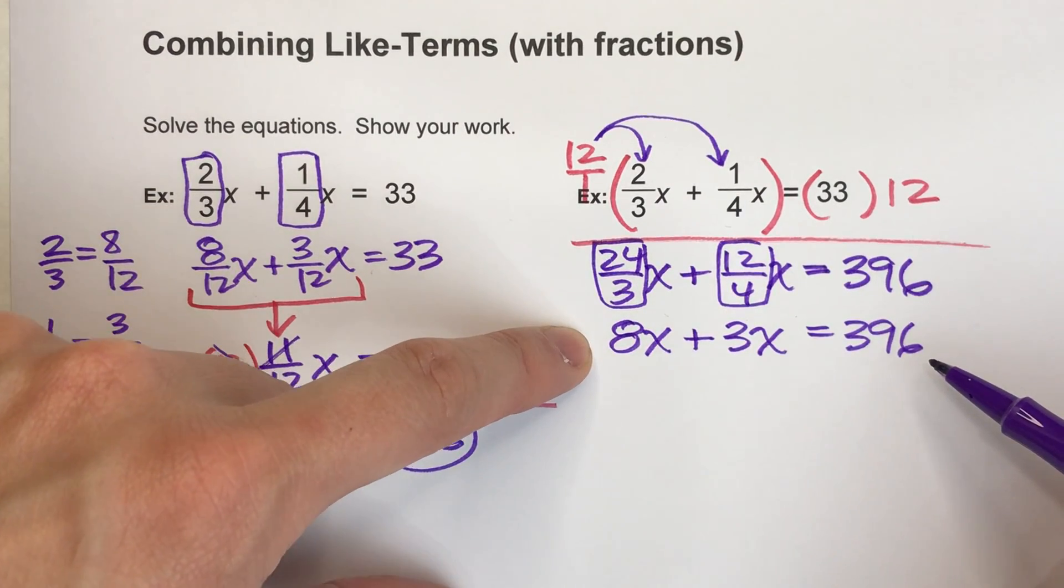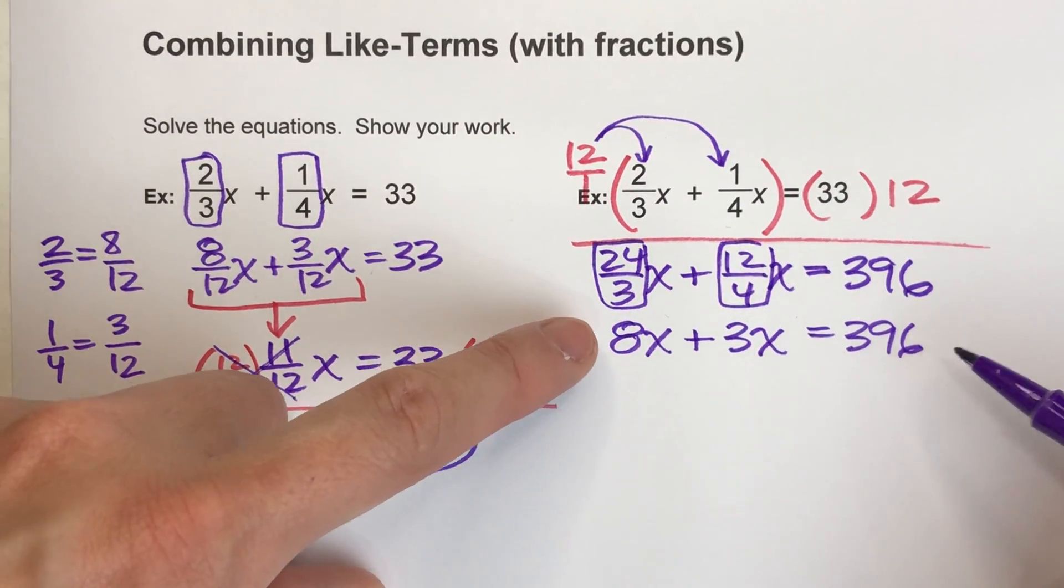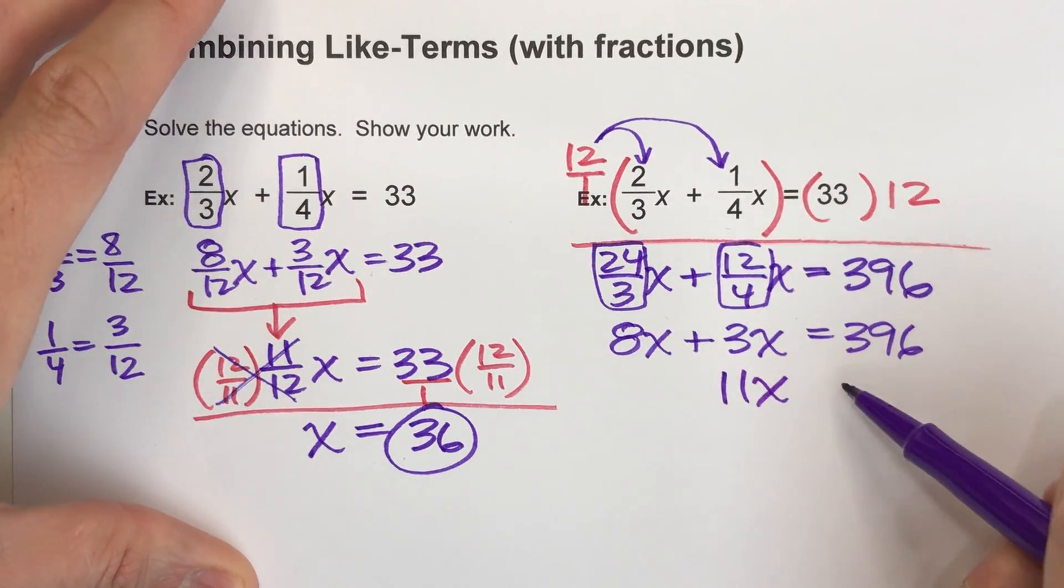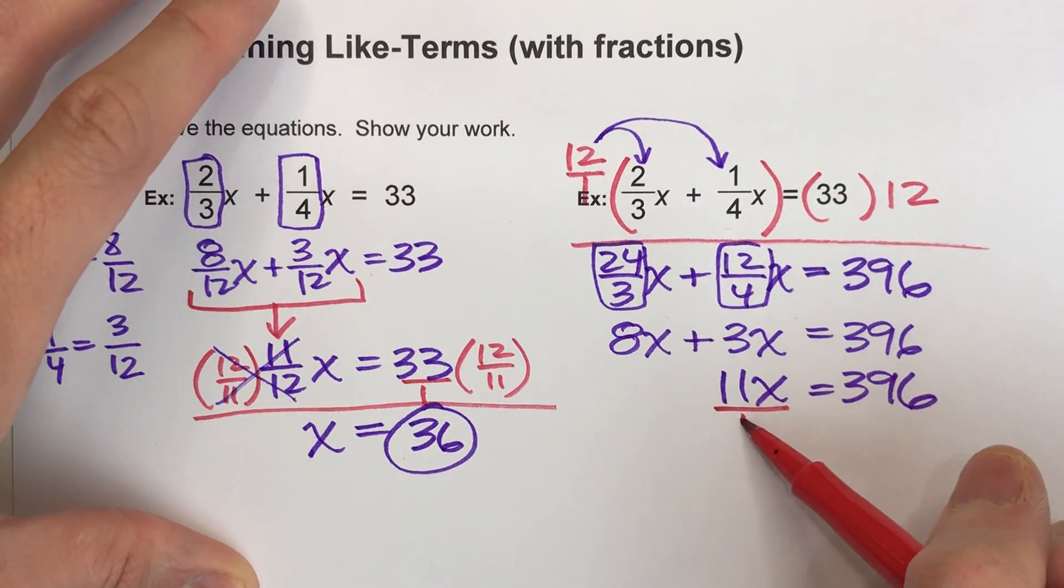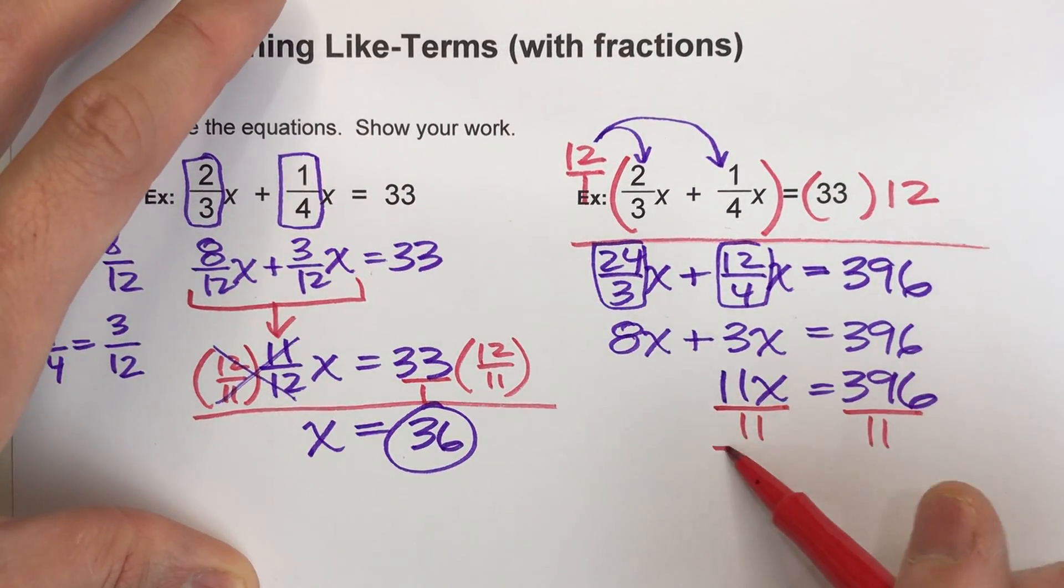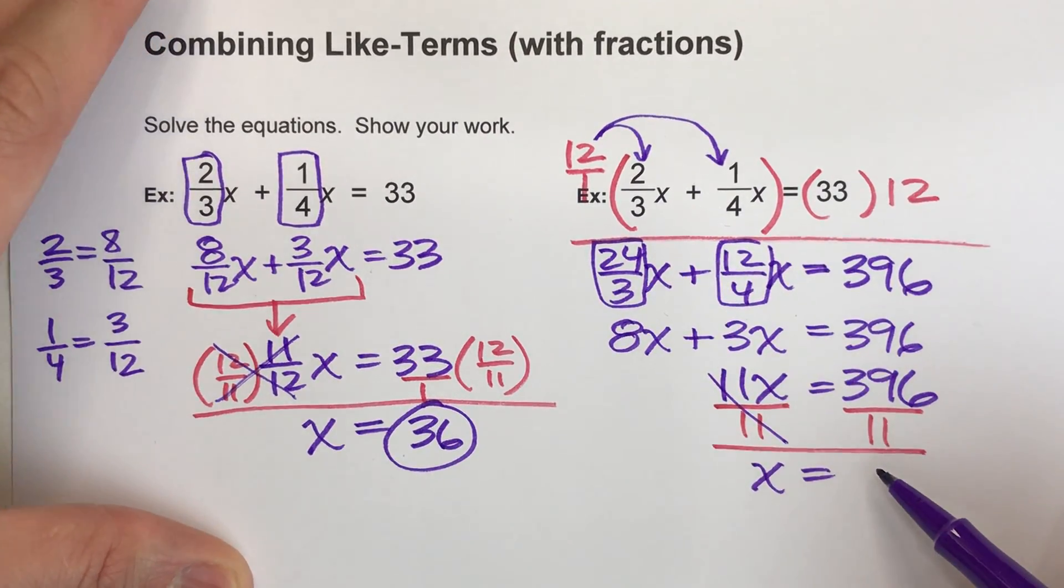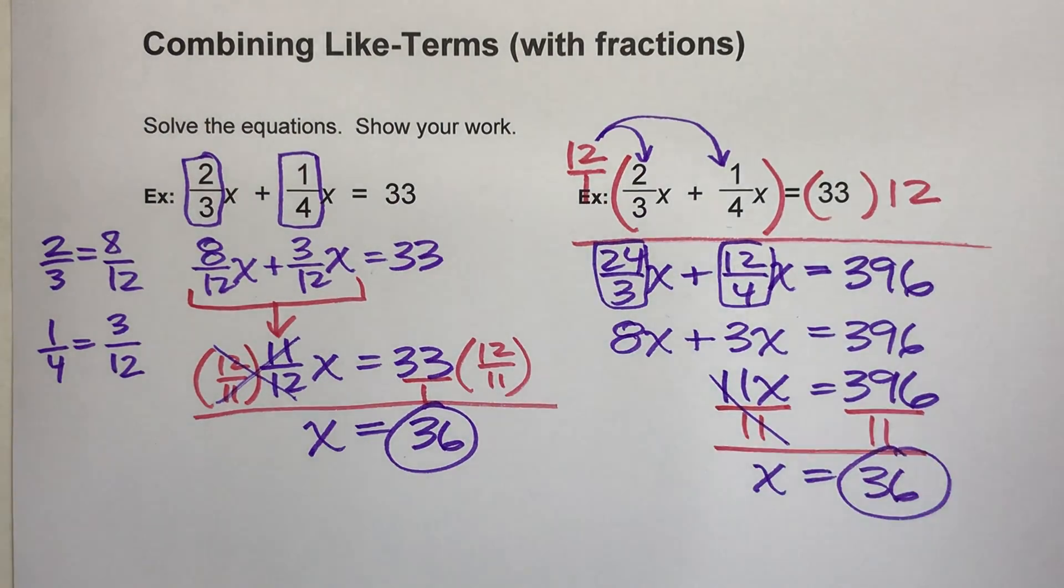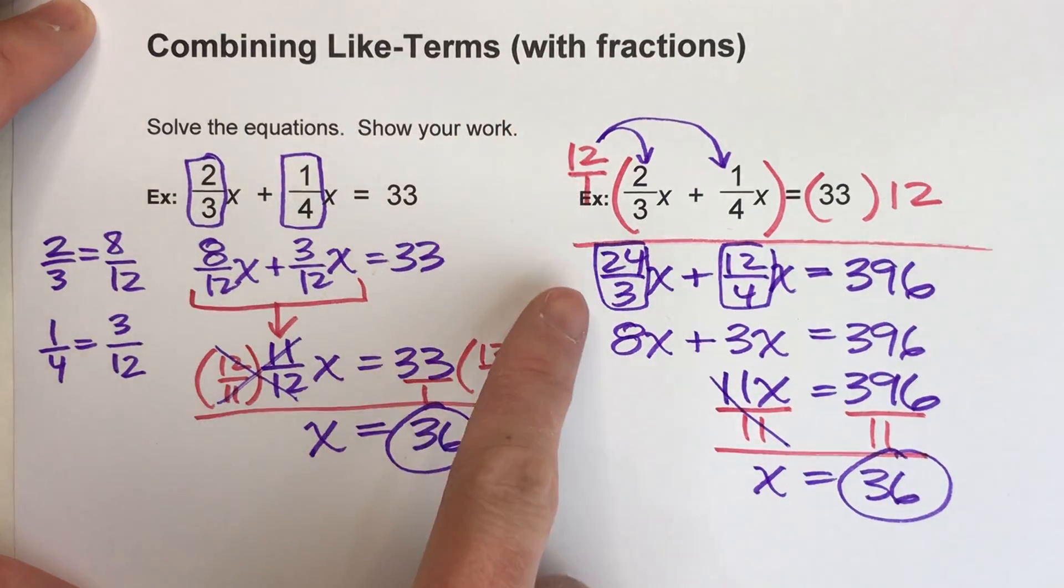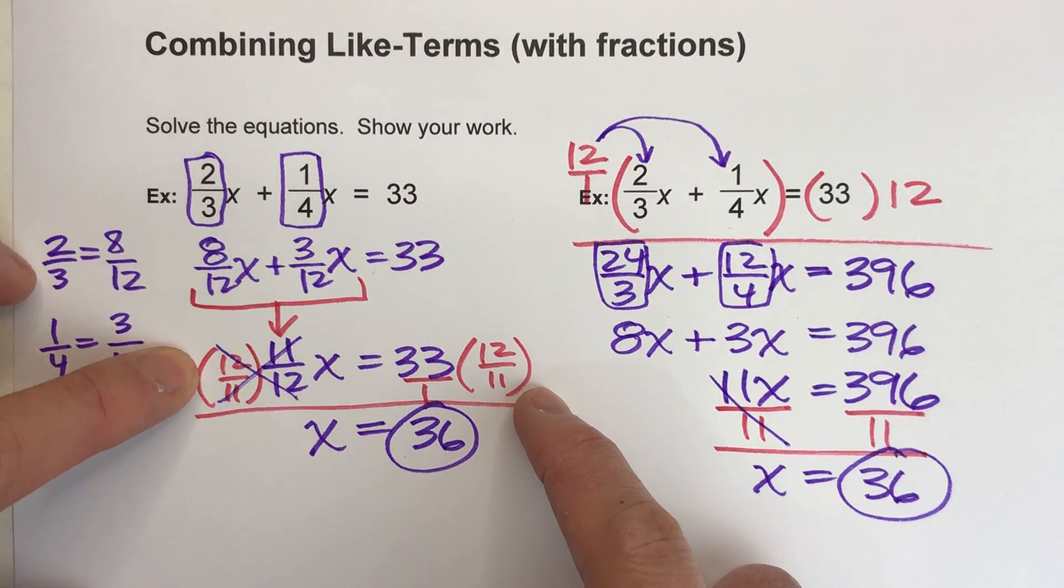And now this equation is much easier to solve, because we don't have to deal with adding any fractions. 8x plus 3x is 11x. So I combine my like terms. And now I just divide both sides by 11, and I've got my answer. x equals, and this is 36. So two different ways to solve the same problem. It just depends on when do you want to eliminate the fractions. Do you want to eliminate the fraction at the very beginning, or do you want to wait until the end to undo the fractions?